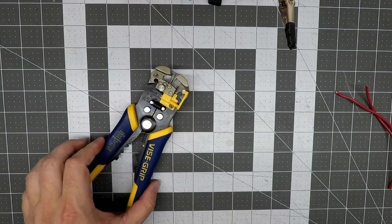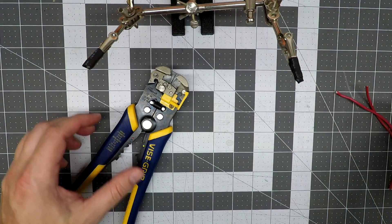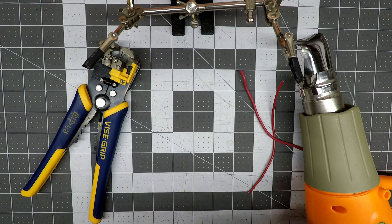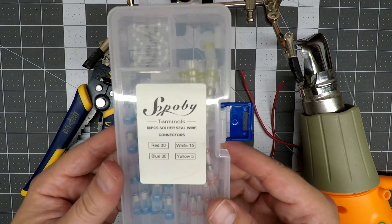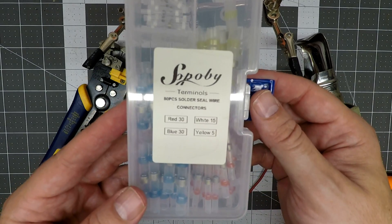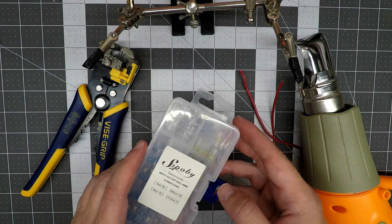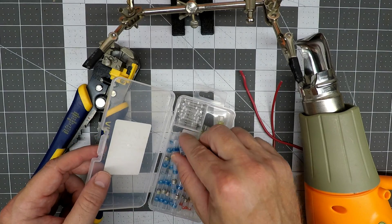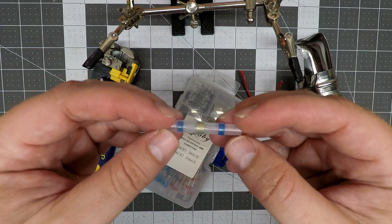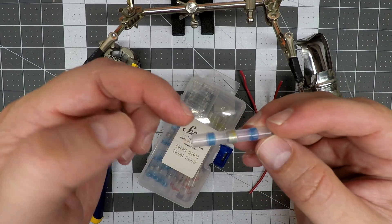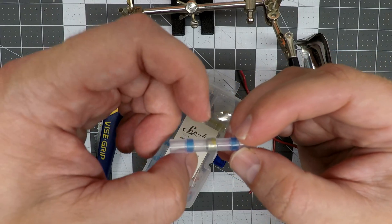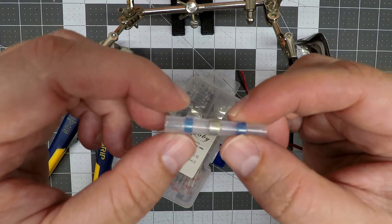Here's what these are: it's a heat shrink tube with adhesive on each side and solder right in the middle that's low temperature enough to where you can use a heat gun to melt it. I'm going to show you how to do it.